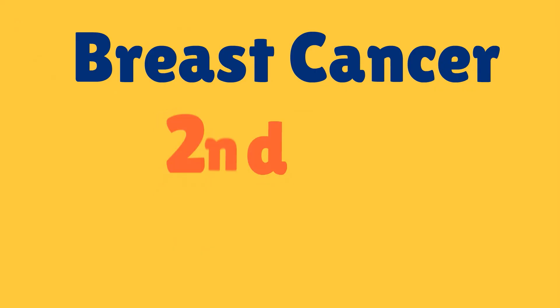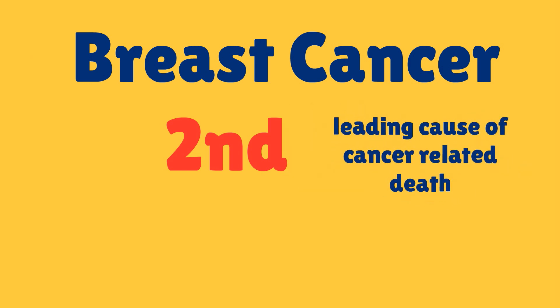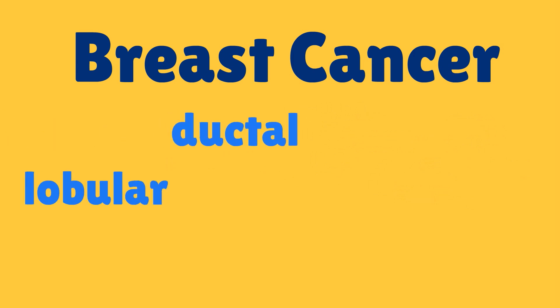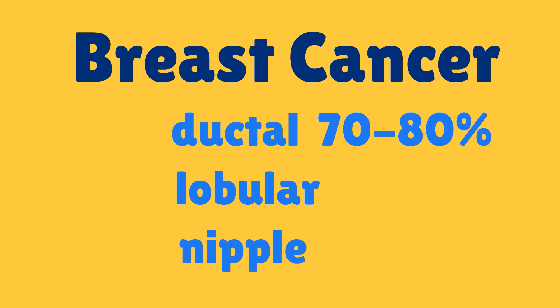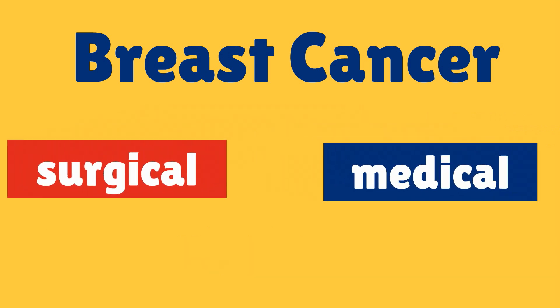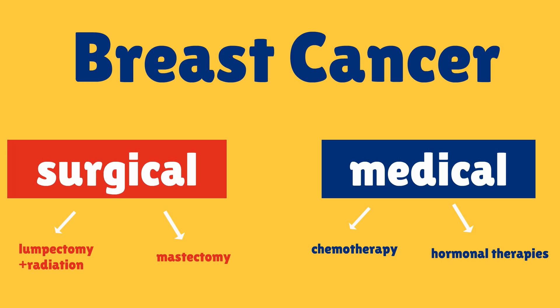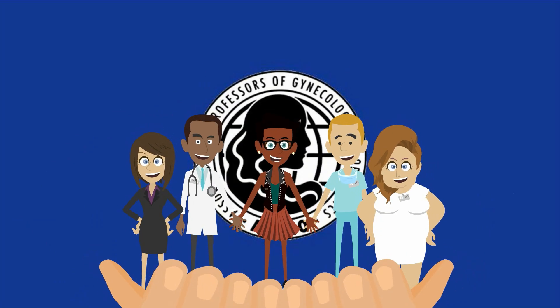We will conclude by discussing breast cancer. It is the second most common malignancy in women and is the second leading cause of cancer-related death in women. There are three histological cell types of breast cancer: ductal, lobular, and nipple, with 70–80% of cancers being ductal in origin. Treatment of breast cancer often involves both surgical and medical therapies. Surgical options include lumpectomy with radiation or mastectomy, and medical therapy options include chemotherapy and hormonal therapies. This concludes the APCO video on breast disorders, having discussed important risk factors, symptoms, and physical exam findings of benign and malignant conditions of the breast.